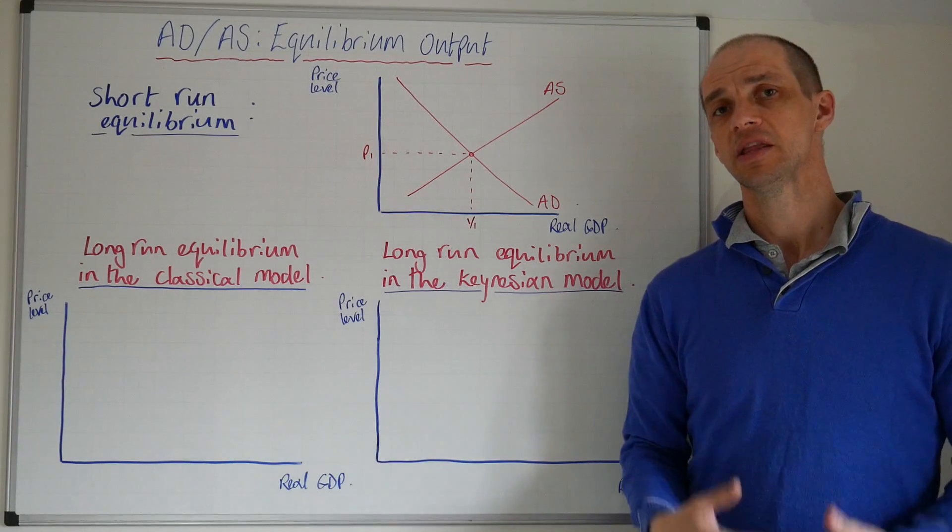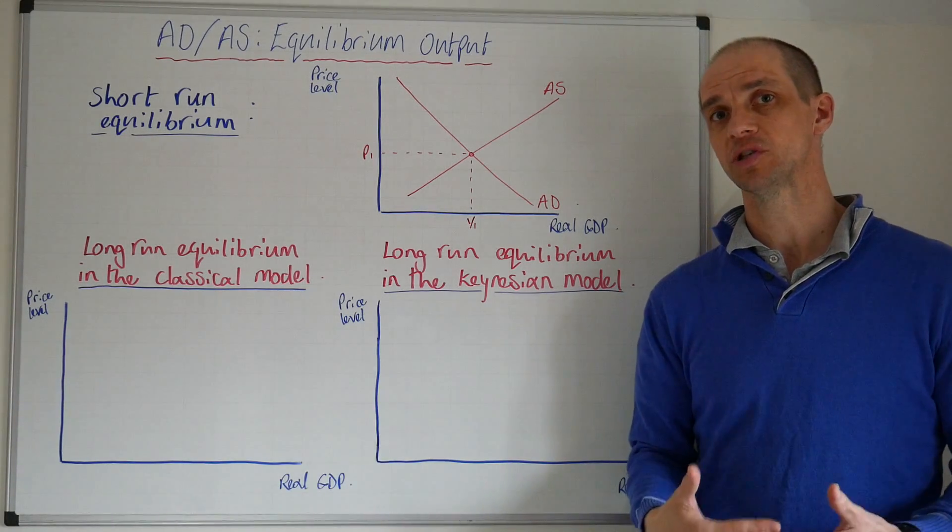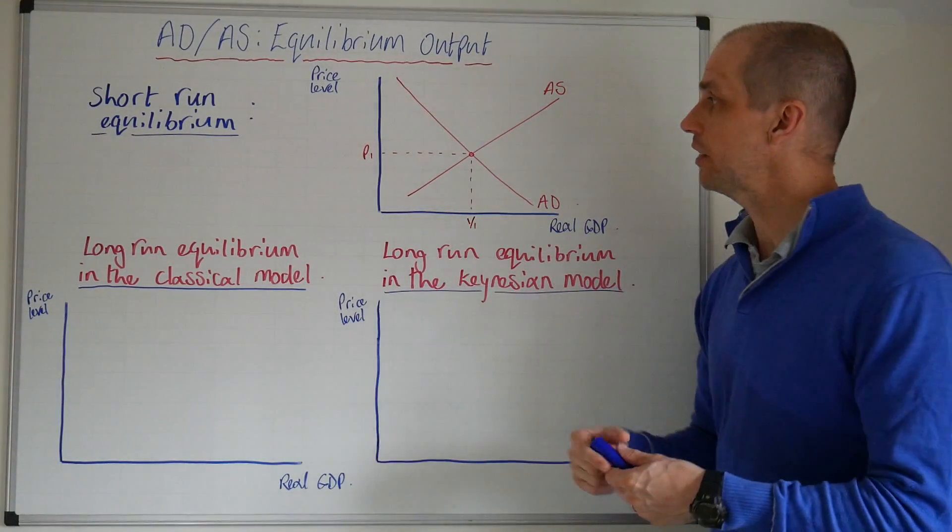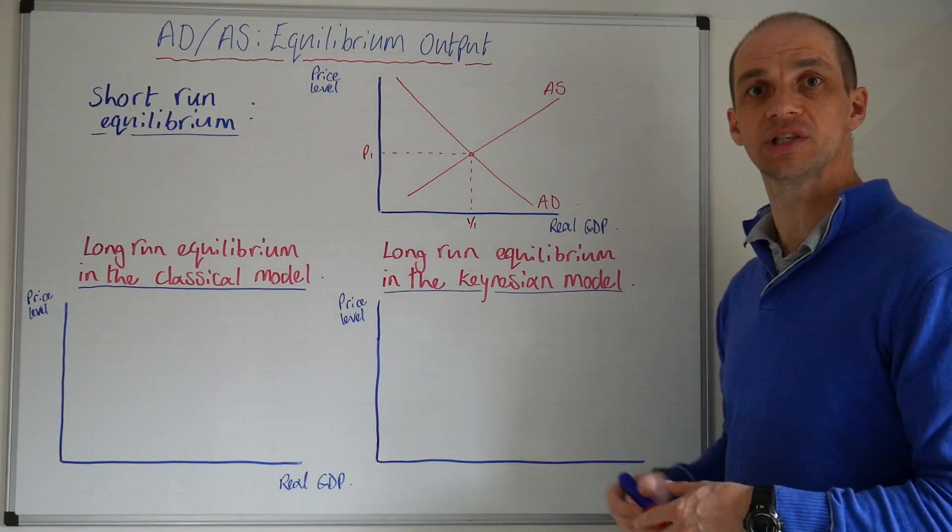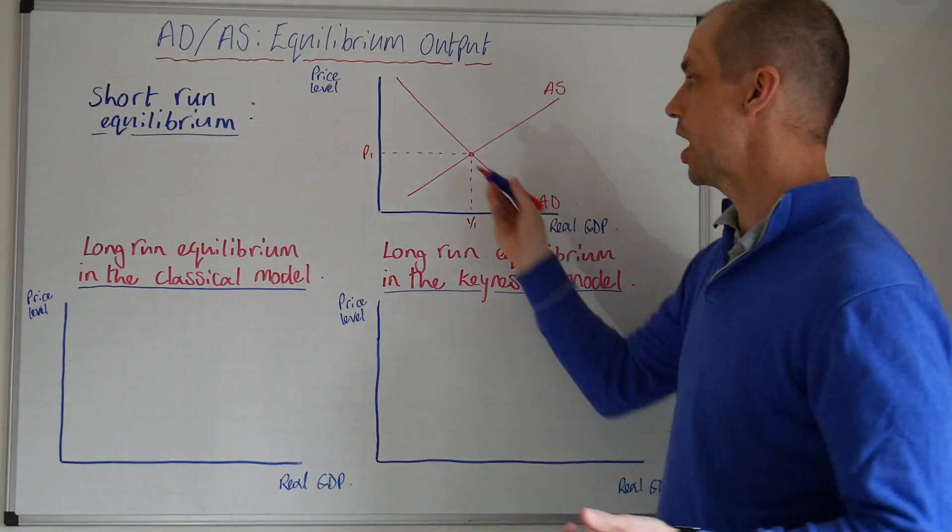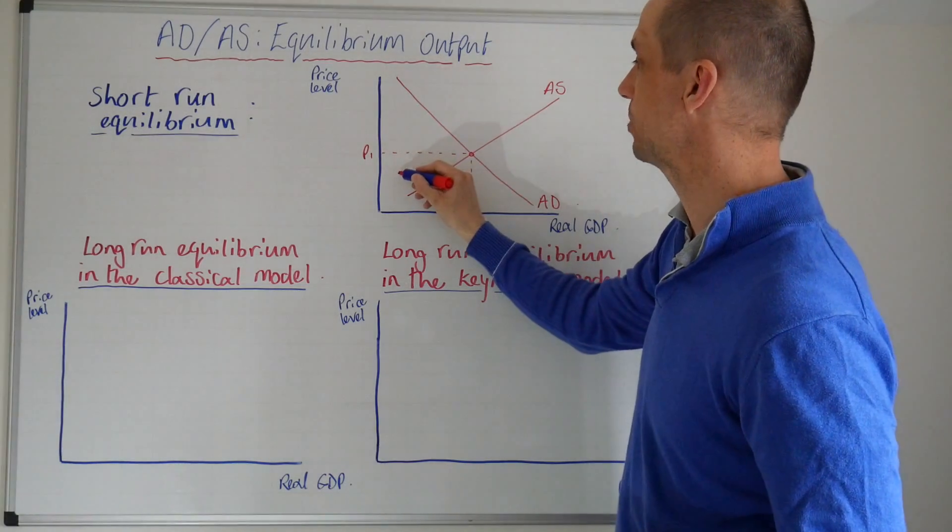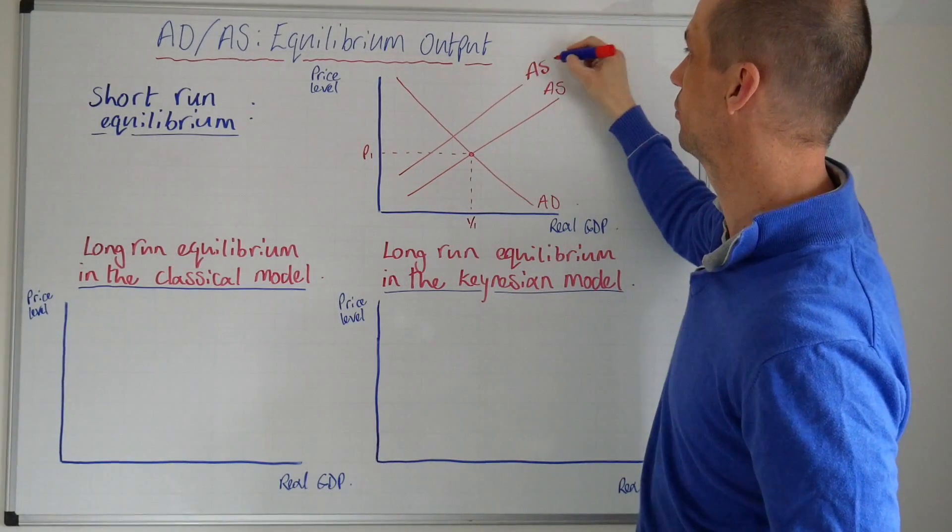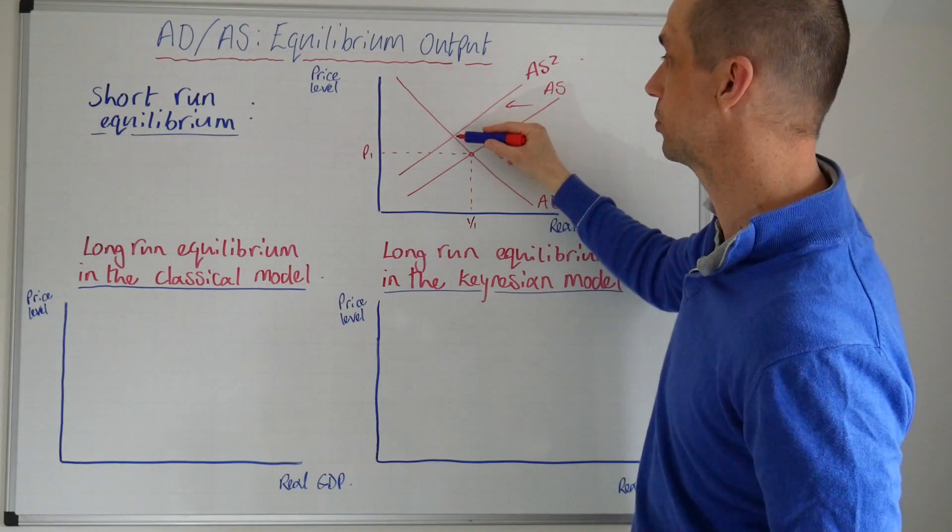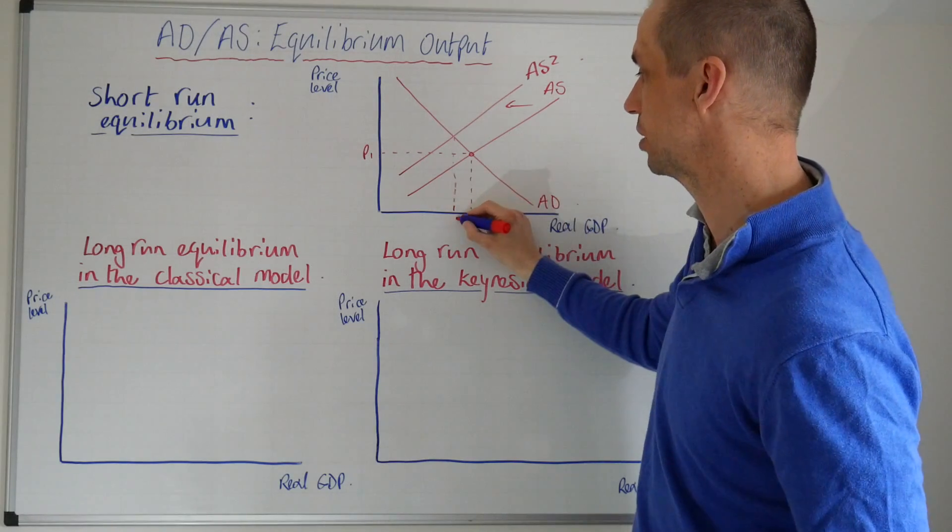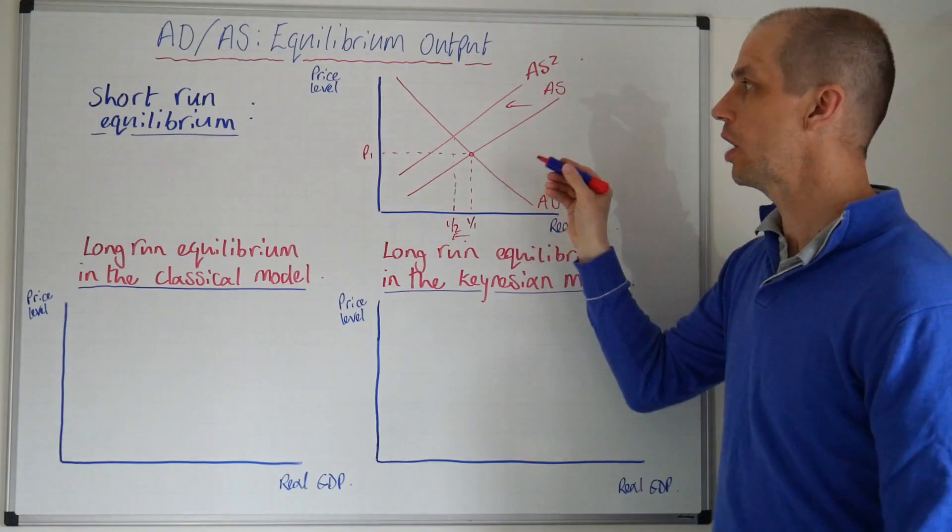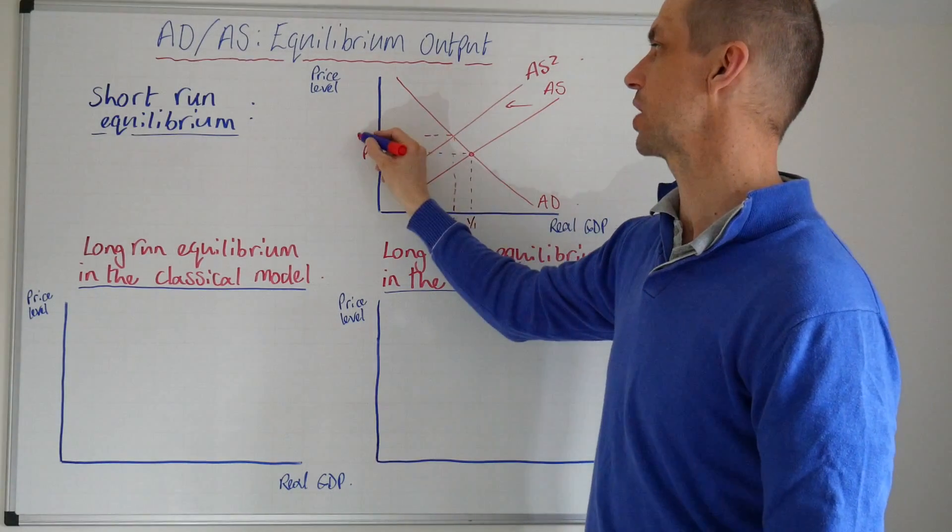So this is nice and straightforward. Now we'll look at various movements of these different curves in subsequent lessons, but for instance if there was an increase in the cost of inputs or wage costs rose, then what we would expect to happen is that the aggregate supply curve would shift to the left and that would correspond with a scenario of cost push inflation where we have lower economic output and a higher price level.